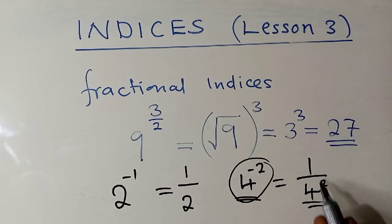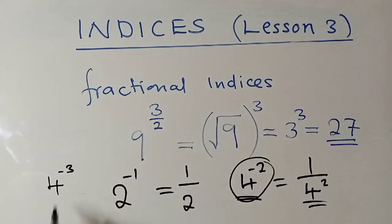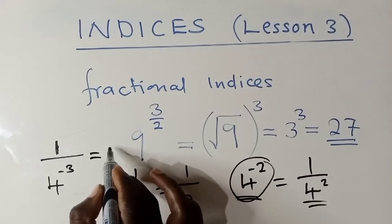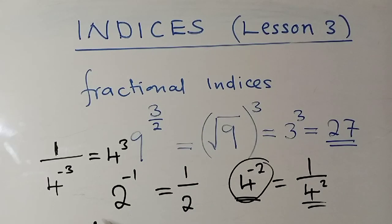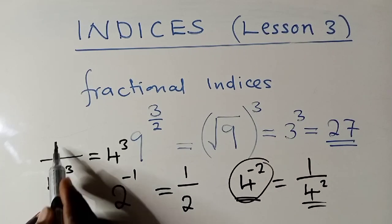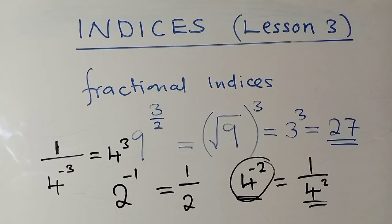If it was on the bottom with a negative power, look at this — it goes on top and the negative disappears. If it was on top with a negative power, it goes down and the negative disappears. That's how it works. You have to know this rule.